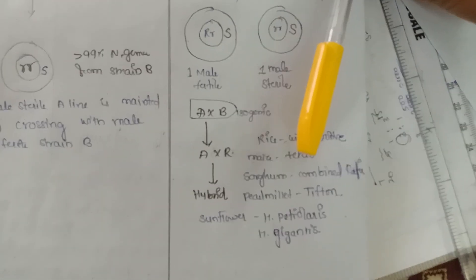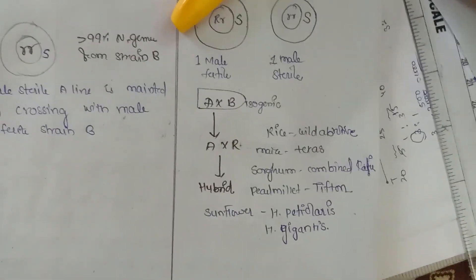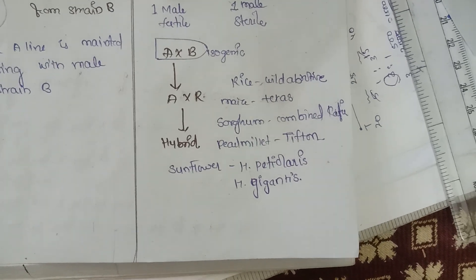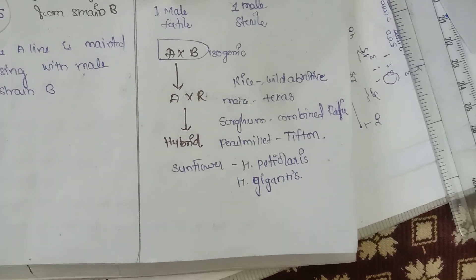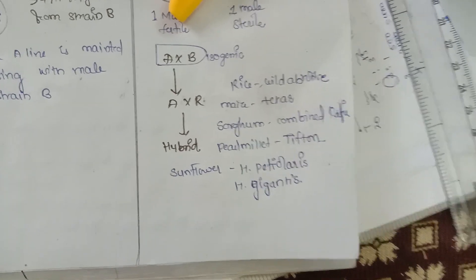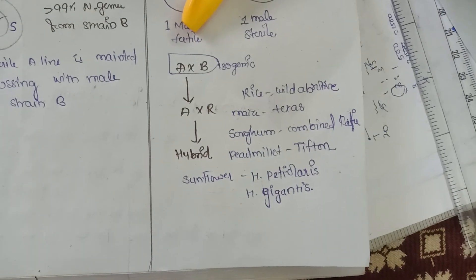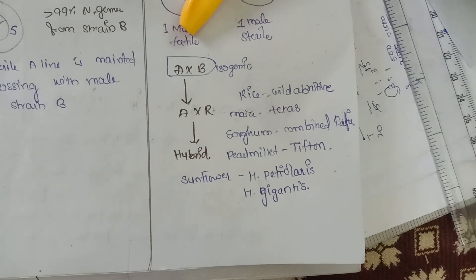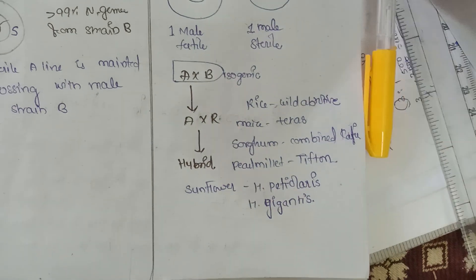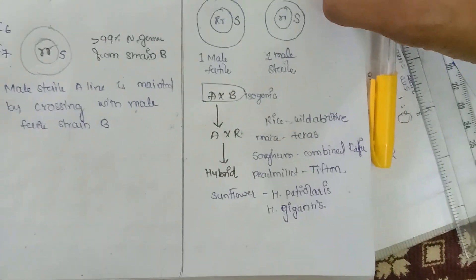Different genes govern male sterility in different crops: in rice it is the Wild Abortive (WA) gene, in maize it is the Texas gene, in sorghum it is the Combine Kafir gene, in pearl millet it is the Tifton gene, and in sunflower it is Helianthus petiolaris and Helianthus giganteus. Thank you.